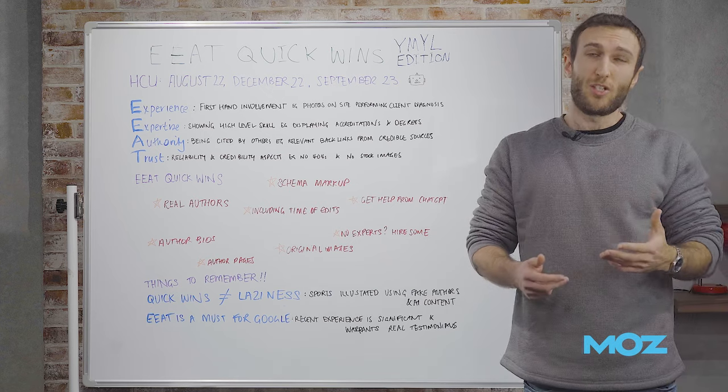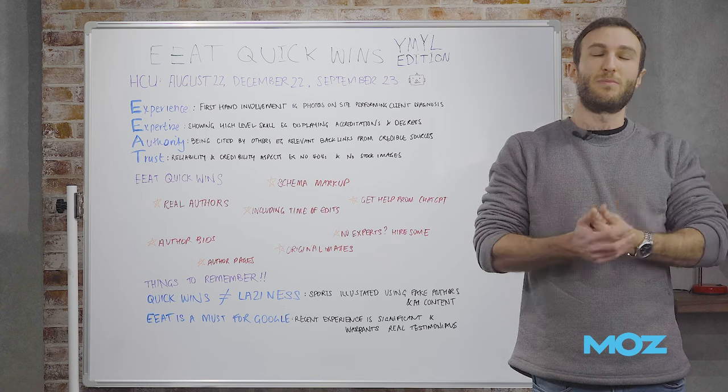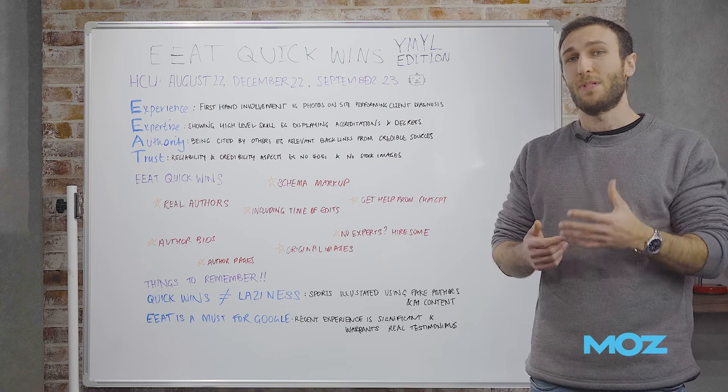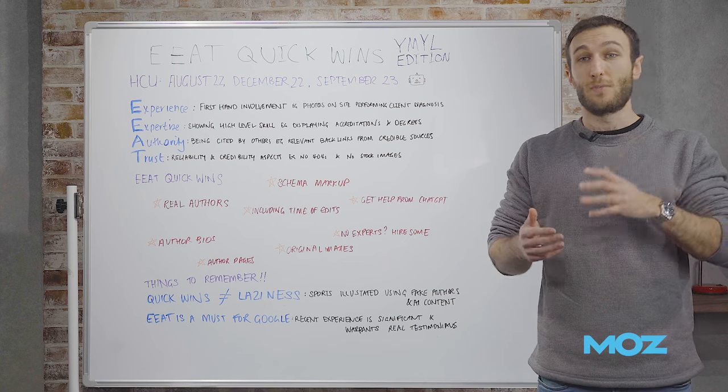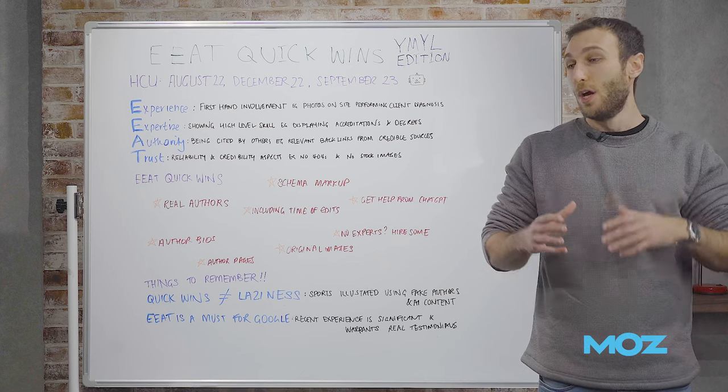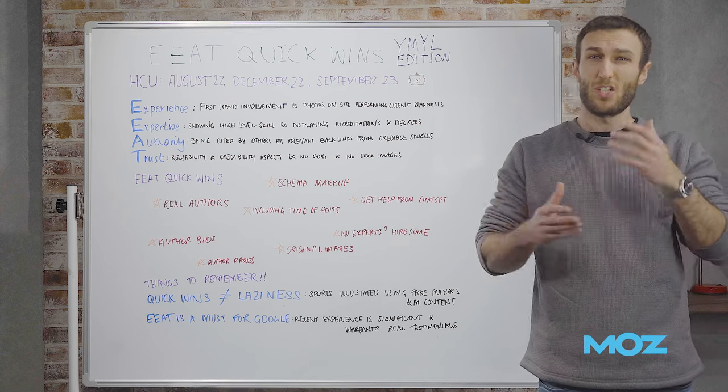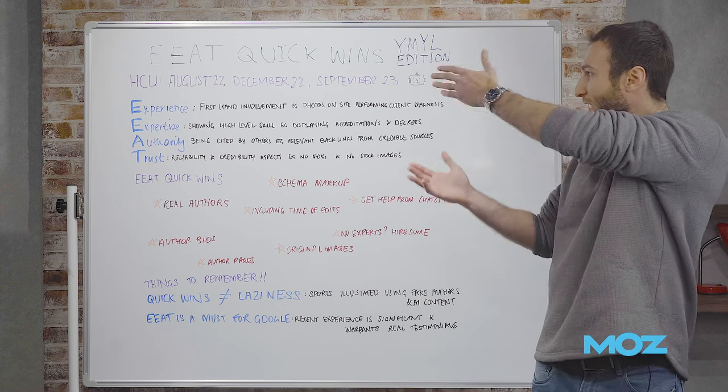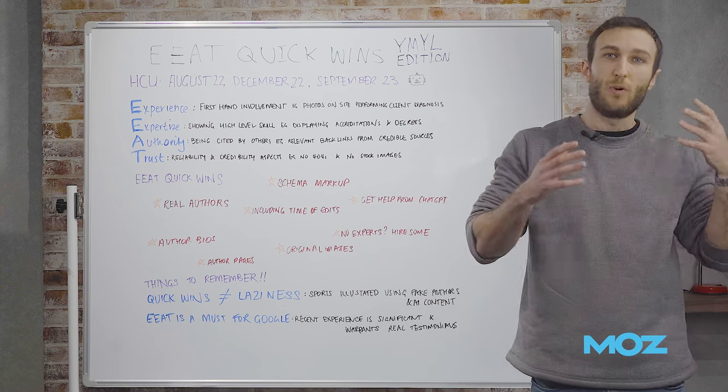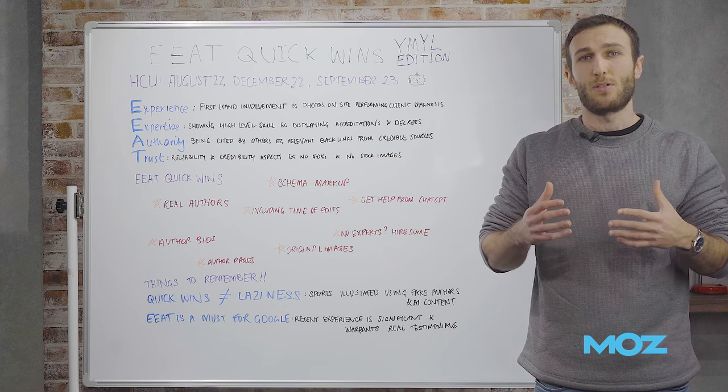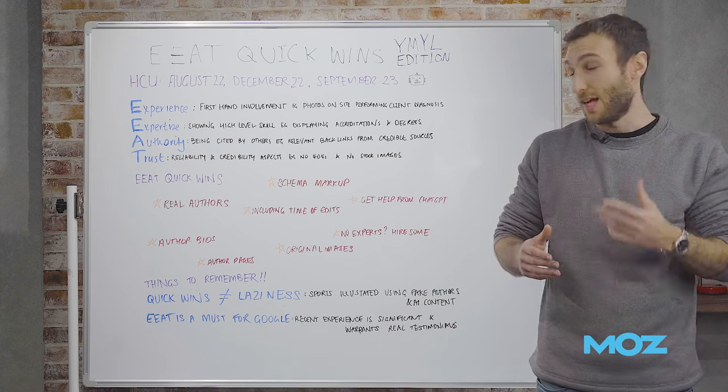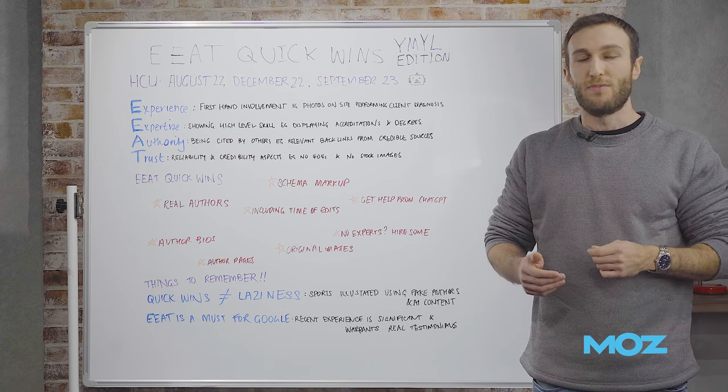Next, get help from ChatGPT. This wouldn't be complete without talking about ChatGPT in the AI world we live in. ChatGPT can help if you've got content written - you can put it into ChatGPT and ask it to critique it based on EEAT signals and what they mean. You can ask ChatGPT to provide analysis and ways to improve that content. That's a really useful tip.